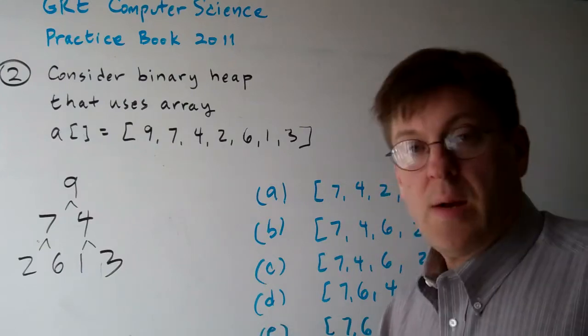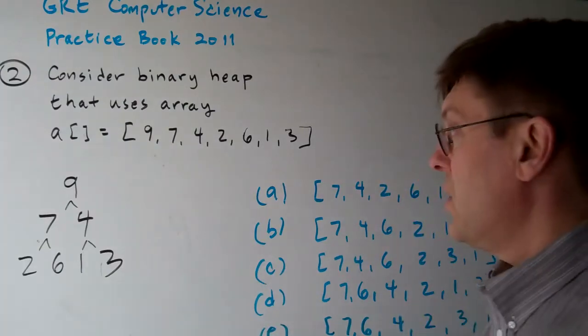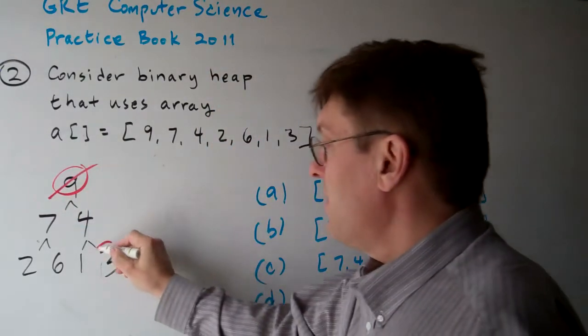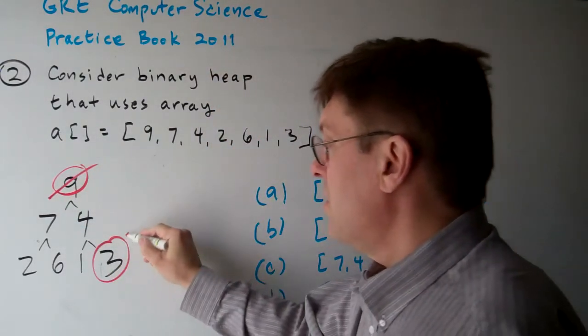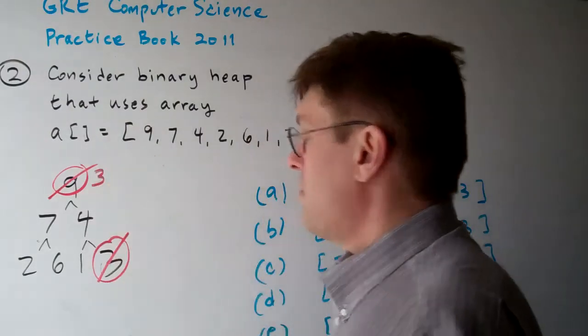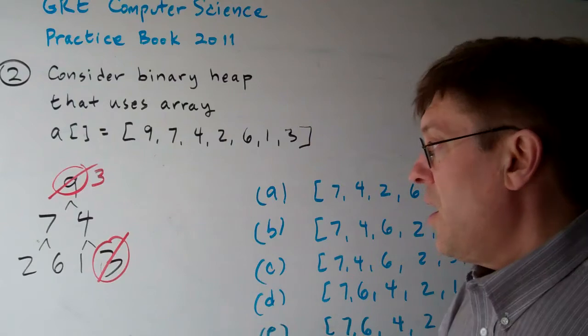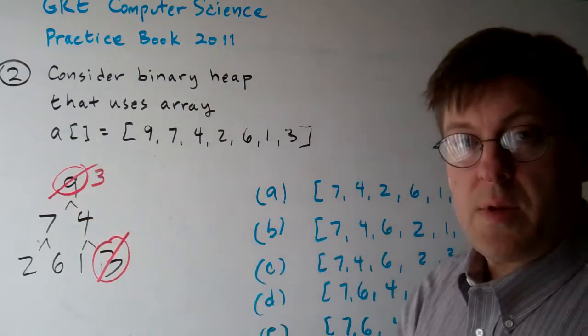Well, delete max operation, the first thing you've got to know is we delete the maximum number and it gets replaced with the last number in the tree, which in this case is a three. And we use a sift operation to sift the maximum number back up to the top.